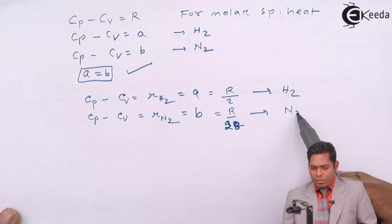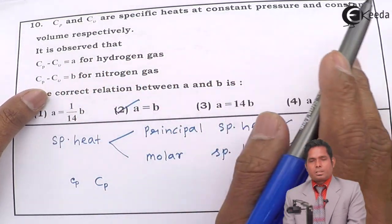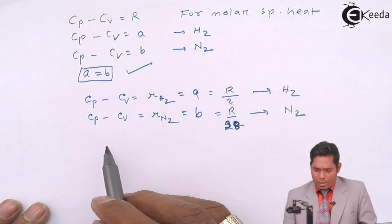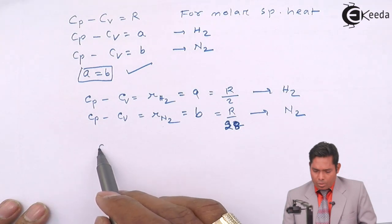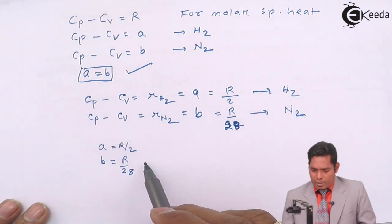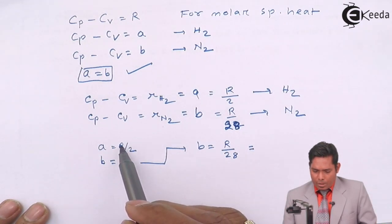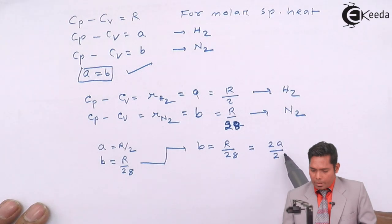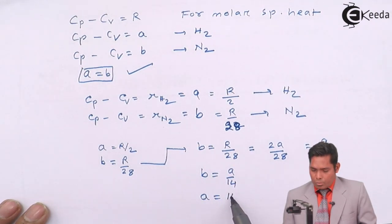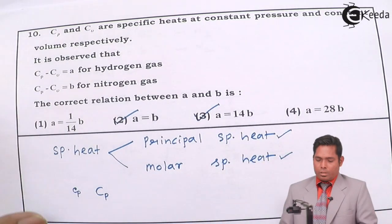If I consider the situation, because nothing is mentioned about the specific heat, you can see here, Cp and Cv is specific heat. So if I go for this, then if I compare this, then what I will get, you can see here, A is equal to R by 2 and B equals to R by 28. So what I can write is, I will take B equals to R by 28, and I can write from here R is equal to 2A. So I will put R equals to 2A divided by 28, so I will get A by 14. So B equals to A by 14 or A equals to 14B. So A equals to 14B, you can see here, this is also an answer.